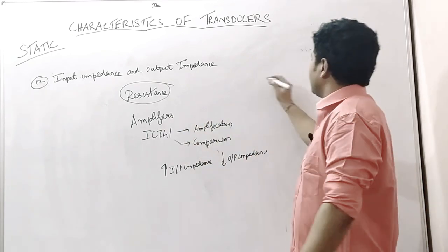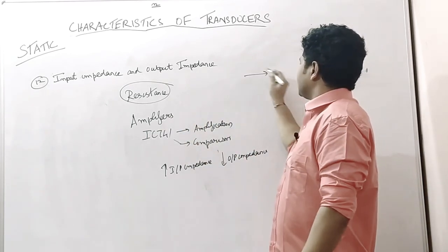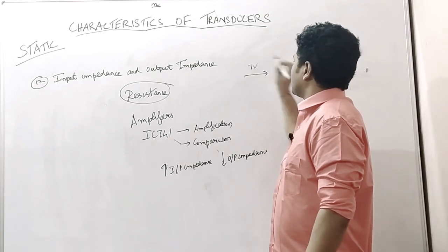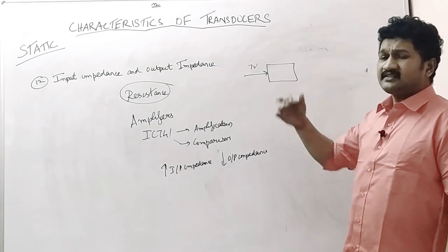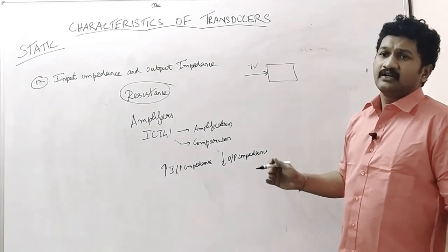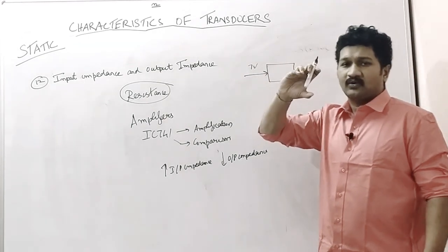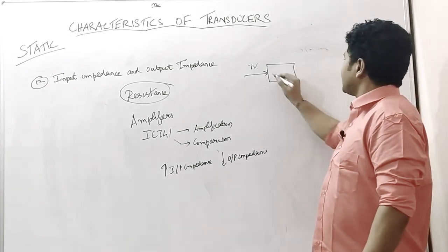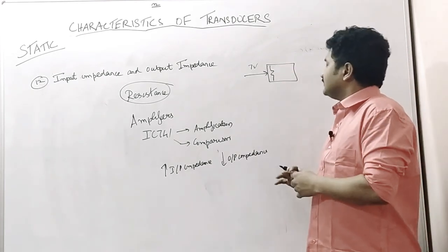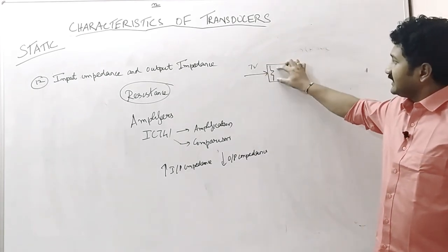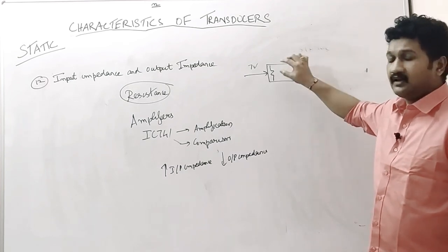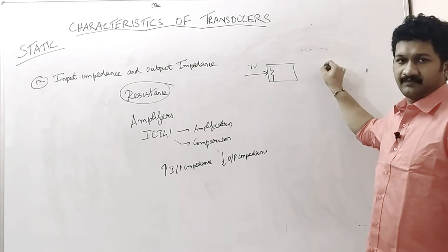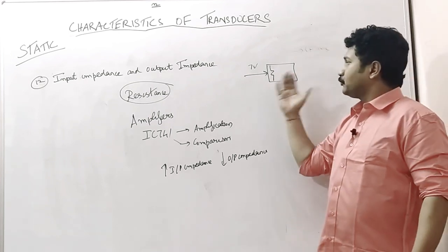For example, this amplifier is fed a signal of some seven volts. It has high input impedance. What is the role of an impedance or resistance? To drop the maximum amount of voltage. If there is a resistor inside here, this seven volt will be totally dropped in this resistor, so that this seven volt can be fully acquired and processed.